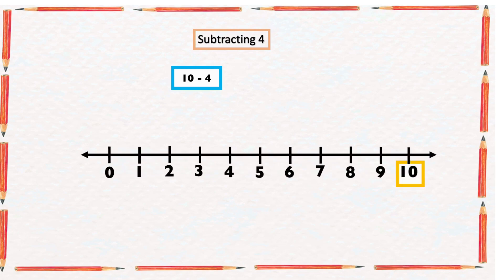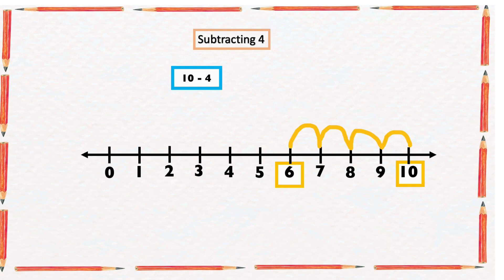Ten minus four: we're going to start from number ten in the number line and count four numbers backward: one, two, three, four. The arrow ended at six, so ten minus four is six.